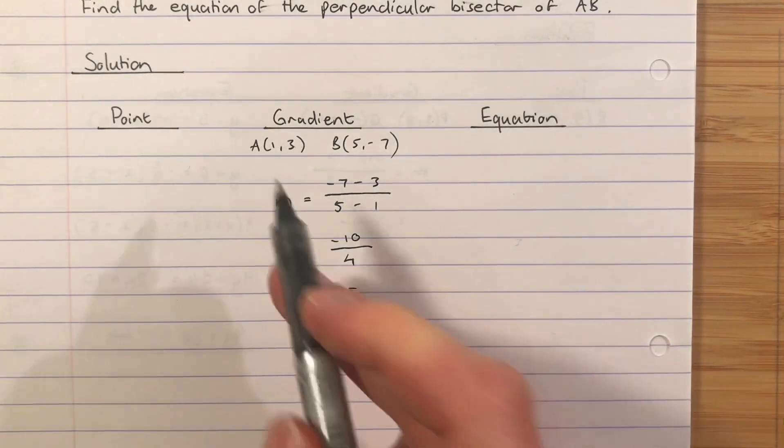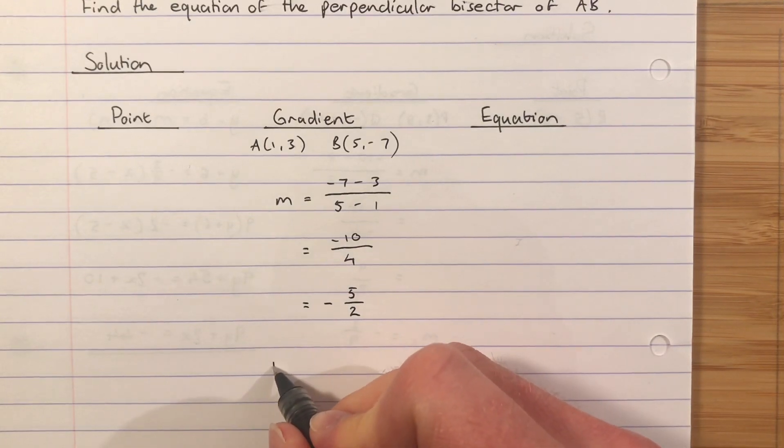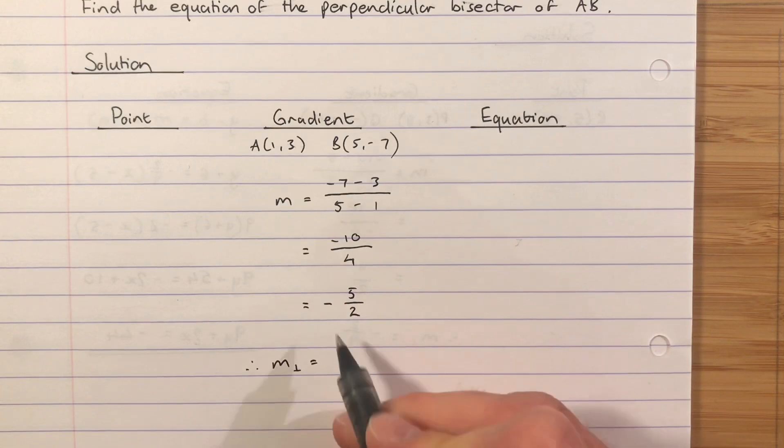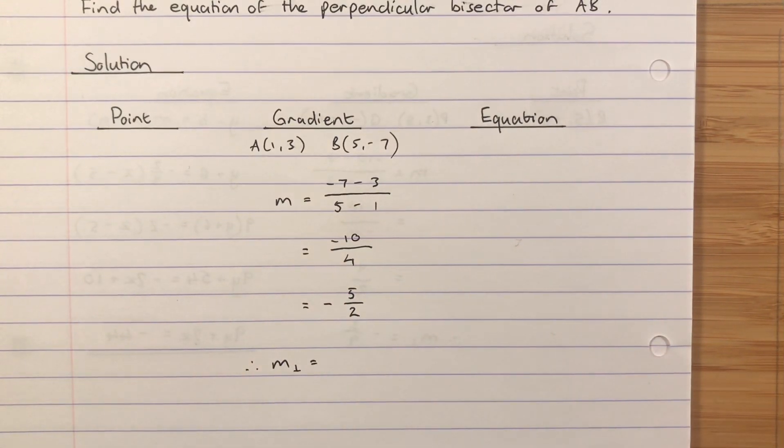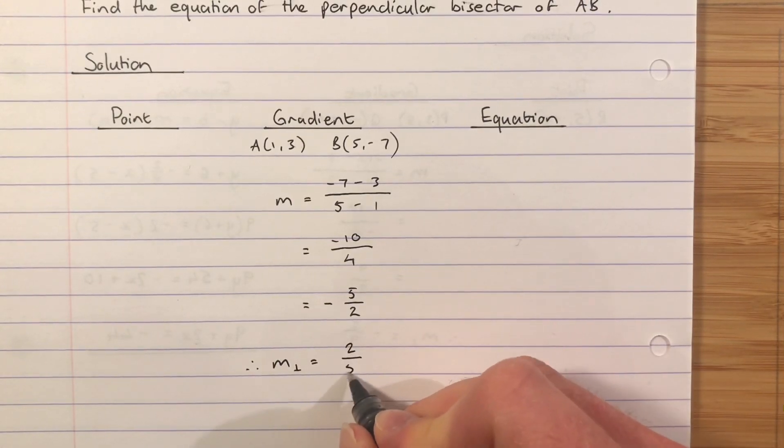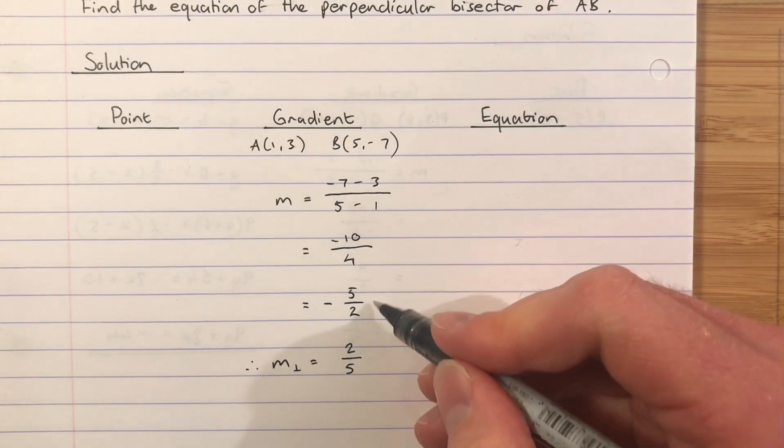If that's the gradient which joins A and B, I want the perpendicular gradient. So therefore, the perpendicular gradient will be the negative reciprocal of this. Well, if it's already negative, it becomes positive. Flip this upside down. The gradient I want is 2/5. So, so far, we've got two marks.